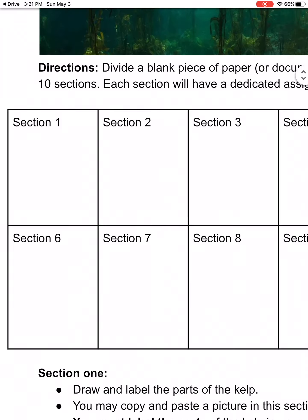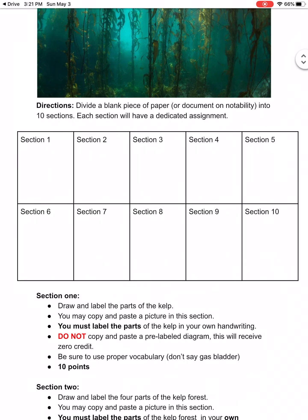In section one, you're going to draw and label the parts of the kelp. You can copy and paste a picture into this section, however you have to label the parts in your own handwriting. Don't copy and paste a pre-labeled diagram — first it's usually wrong, and second it's going to receive no credit. Be sure that you use the proper vocabulary, say pneumatocyst, not gas bladder.